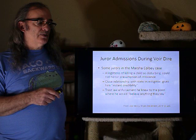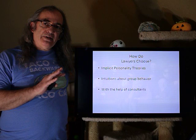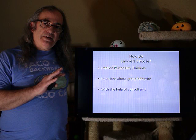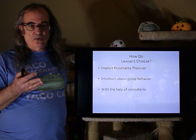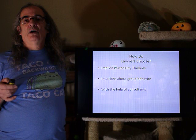How do lawyers actually choose jurors? We'll look at three broad areas: implicit personality theories, intuition about group behavior, and using the help of consultants. There will obviously be exceptions and combinations, but these are the main frameworks.